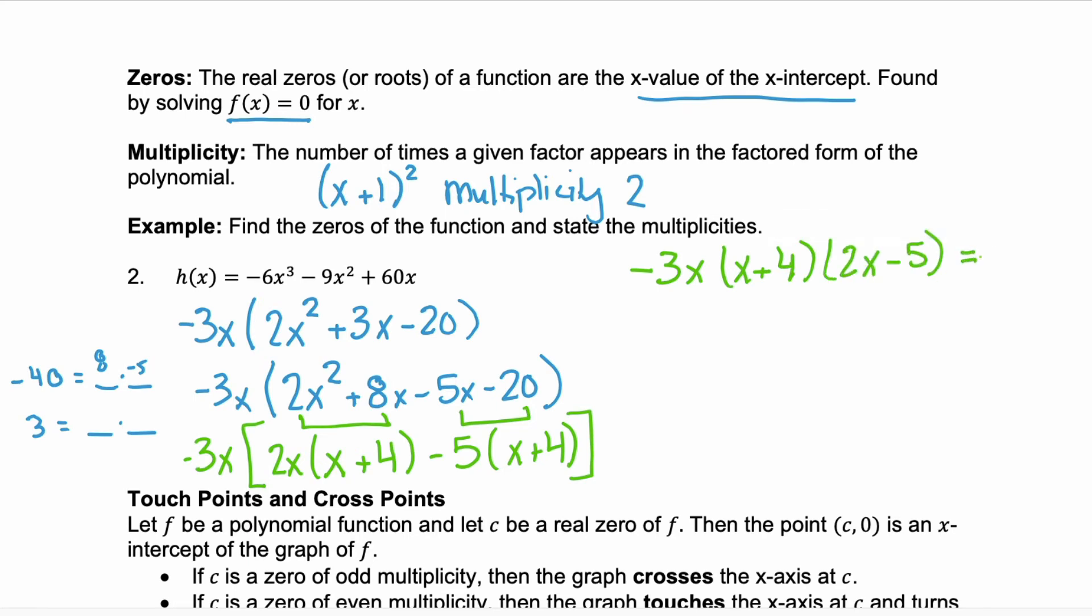And remember, we're solving this equal to 0. So, that's where you use that zero product property. So, we want to know -3x = 0. Well, that happens when x = 0. We want x + 4 = 0. Subtract 4 from both sides, and that zero is x = -4. And our last one, 2x - 5 = 0. We'll add 5. 2x = 5. Divide by 2. And we have x = 5/2.